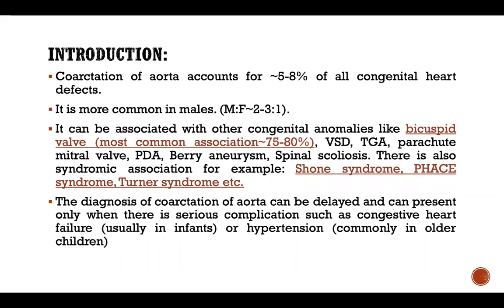Coarctation of aorta accounts for nearly 5–8% of all congenital heart defects. It is more common in males, with a male-to-female ratio of 2–3:1. It can be associated with other congenital anomalies like bicuspid aortic valve, which is the most common association seen in 75–80% of cases, as well as VHD, TGA, parachute mitral valve, patent ductus arteriosus, berry aneurysm, and spinal scoliosis.